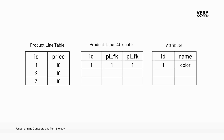Inside of this new link table, it will generate a primary key, which will be ID, and then it will also place in two foreign keys: one foreign key connected to the product line table, and one foreign key connected to the attribute table. So let's look at it this way — let's start from the product line table and add a new product line.